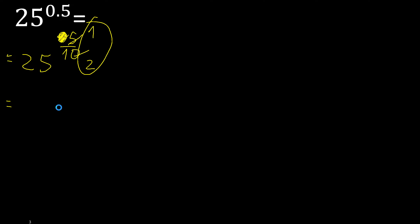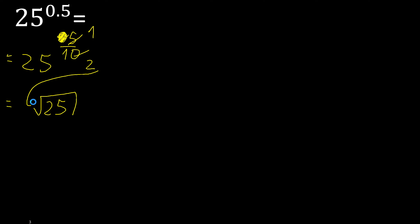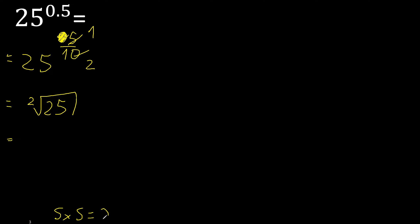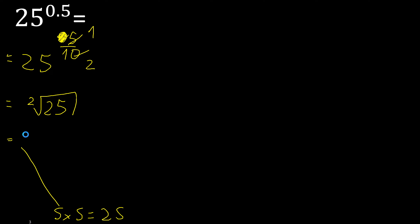Exponent, fraction, therefore root 1. Exponent is 1, therefore eliminate 2 numbers that multiply to 25. 25 equals equal numbers, therefore here 5. Finish it.